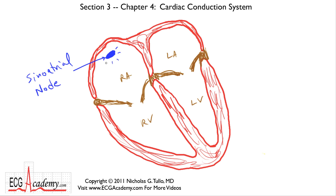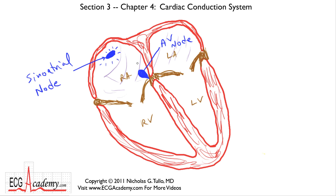The sinus node sends out electrical signals, and these signals spread rapidly across the top chambers of the heart, which gets the top chambers to contract. Now the signal has to get to the bottom chamber somehow. There turns out to be an electrical connection in the middle part of the septum — the atrial septum. We refer to this special structure as the atrioventricular node, or AV node. The AV node is a collection of specialized cells that receive the signal from the atria and delay it for a split second.